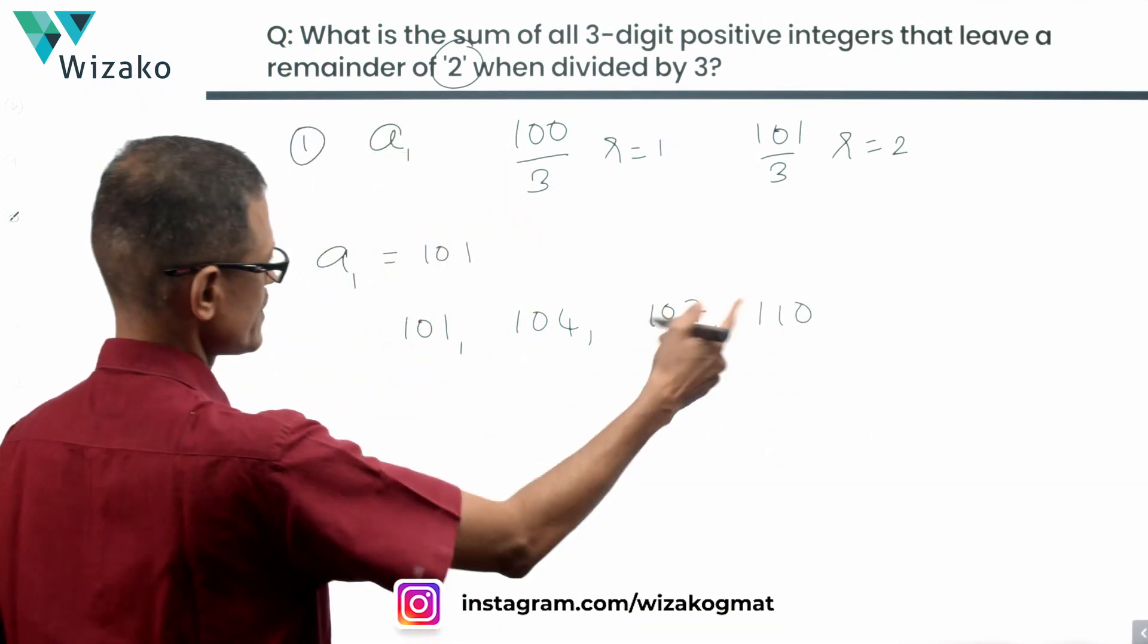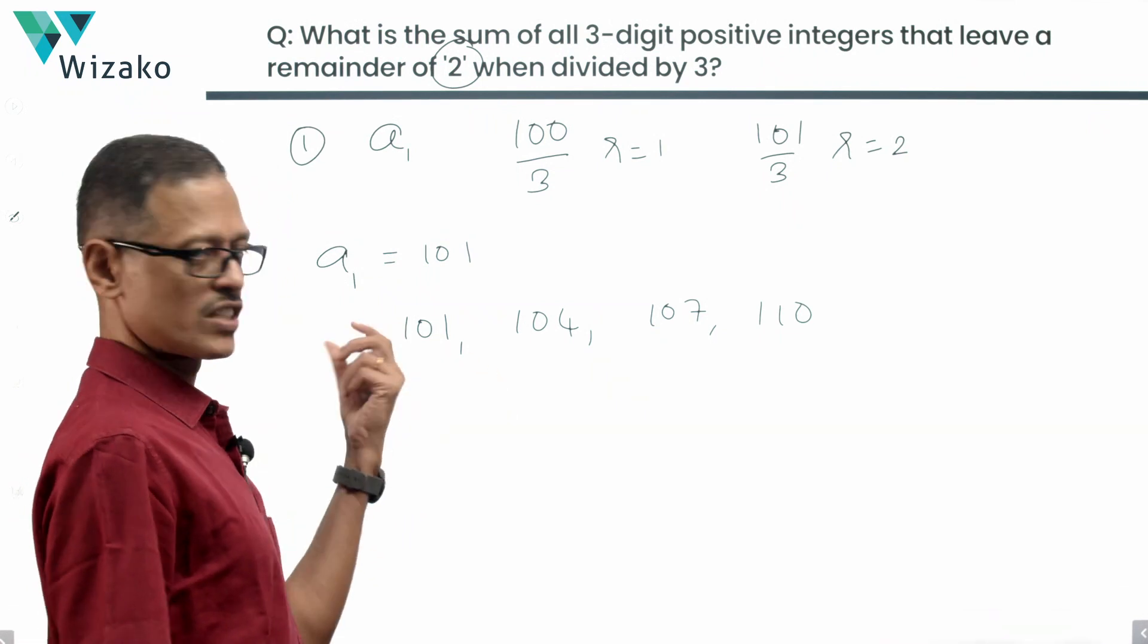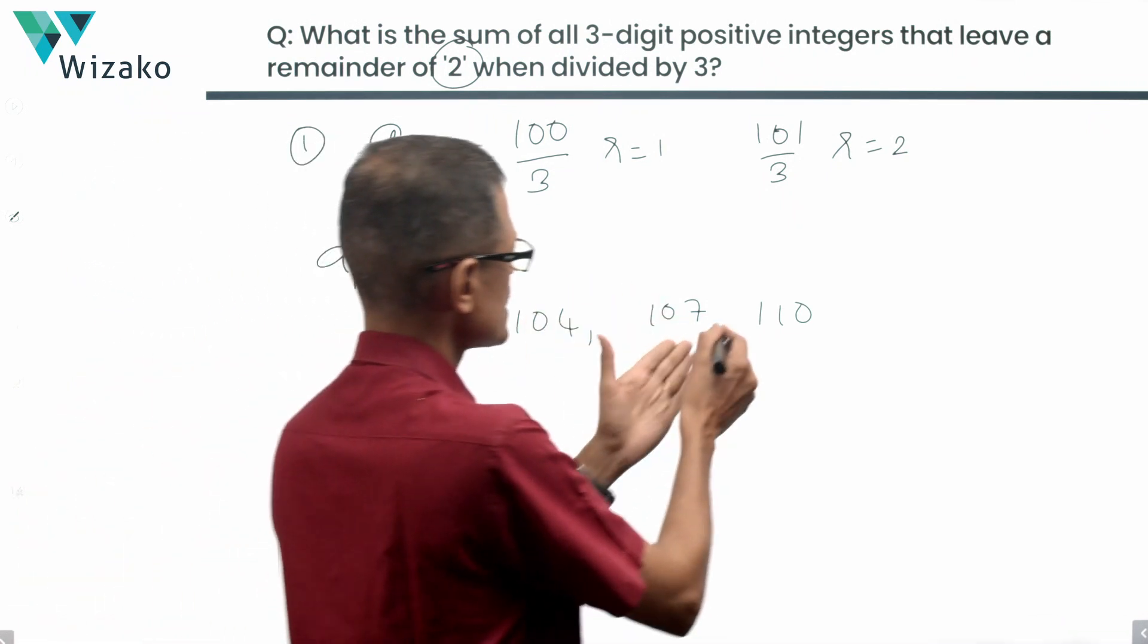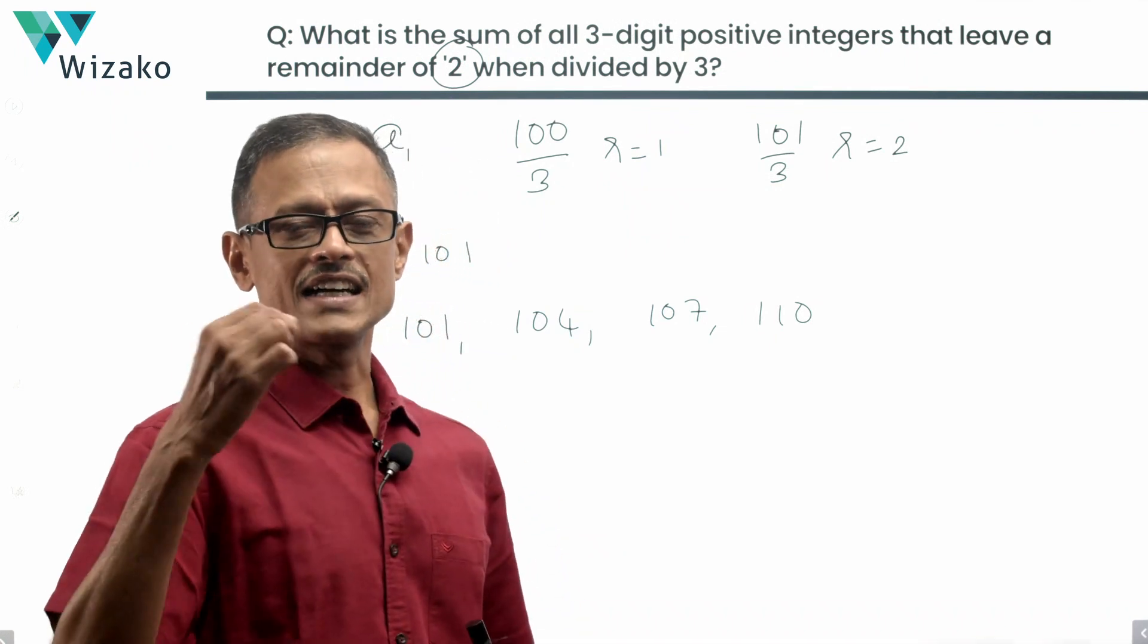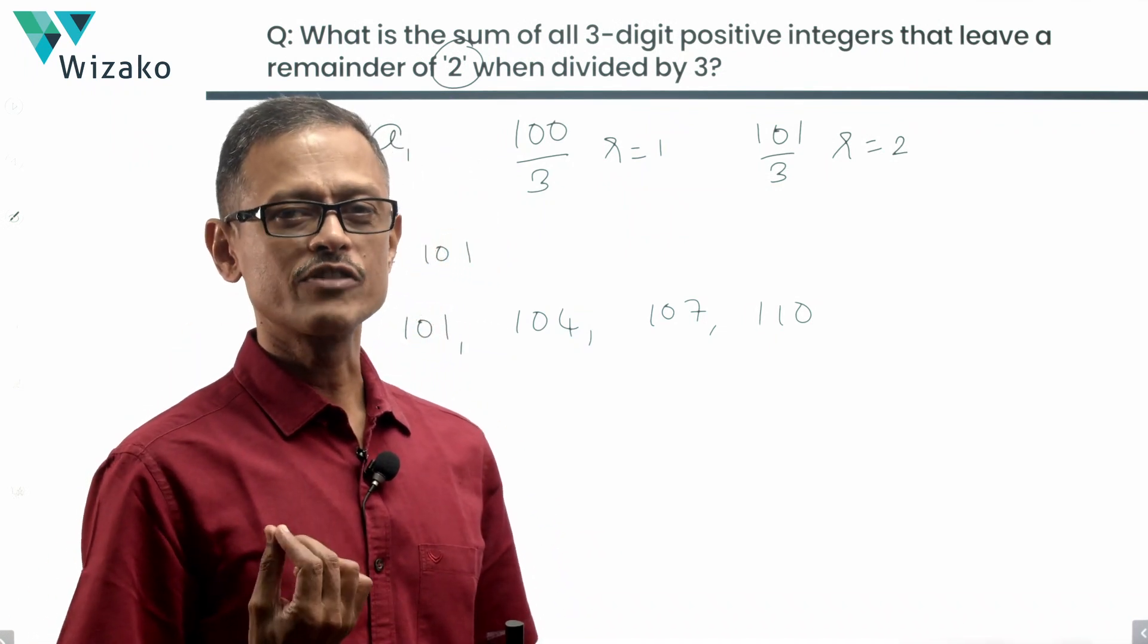So essentially, we are looking at a sequence which starts with 101 as the first term, a1: 104, 107, 110. So all of these are in an arithmetic progression with a common difference of 3.